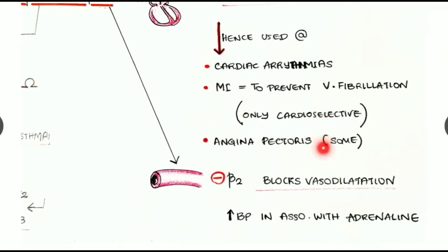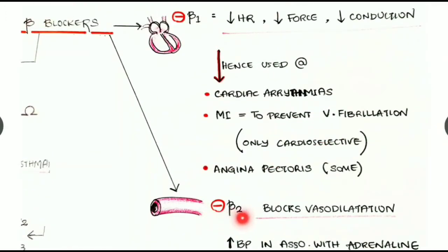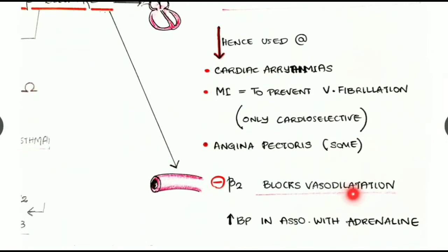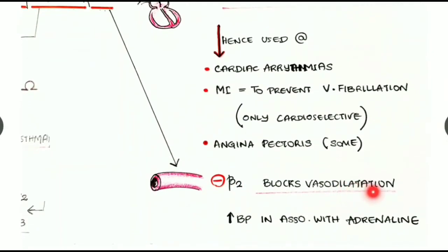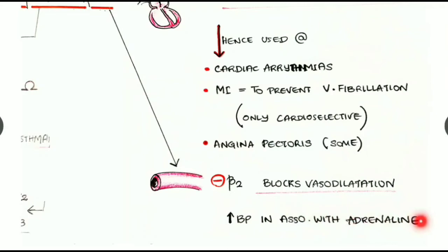In blood vessels, beta blockers inhibit beta-2 receptors, causing inhibition of vasodilatation, which increases blood pressure — but this is seen only in cases of adrenaline action, that is only in association with adrenaline.